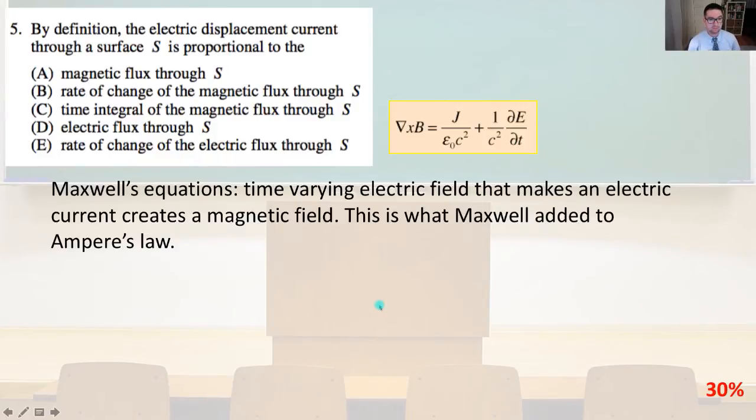By definition, the electric displacement current through a surface S is proportional to. So from Maxwell's equations, we know that a time varying electric field that makes an electric current creates a magnetic field. So that is what Maxwell added to Ampere's law. And that is the rate of change of the electric flux through S. And it's this right here. And so as you can see, that is answer E.